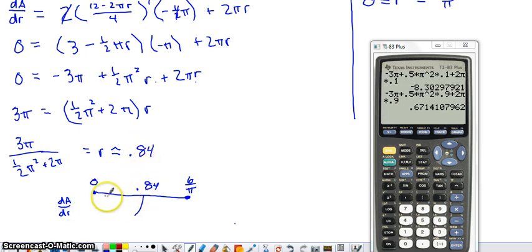I picked a number over here, I picked .1 and I evaluated my derivative. I evaluated the simplified form of the derivative with an r value of .1 and I got a negative value for my derivative. And then I also evaluated it at .9 which would obviously be between .84 and 6/π, and I got a positive value for my derivative.